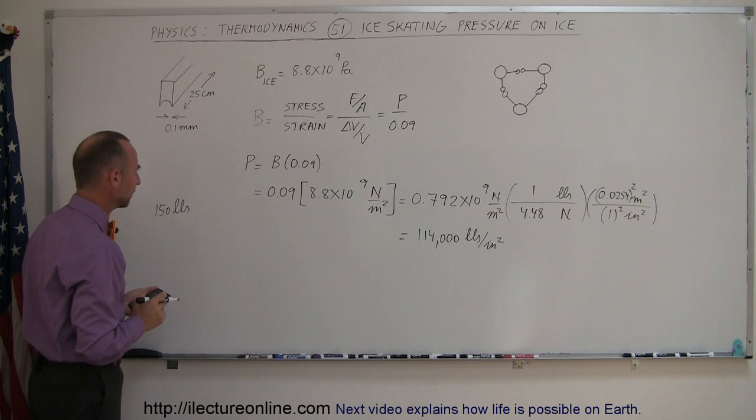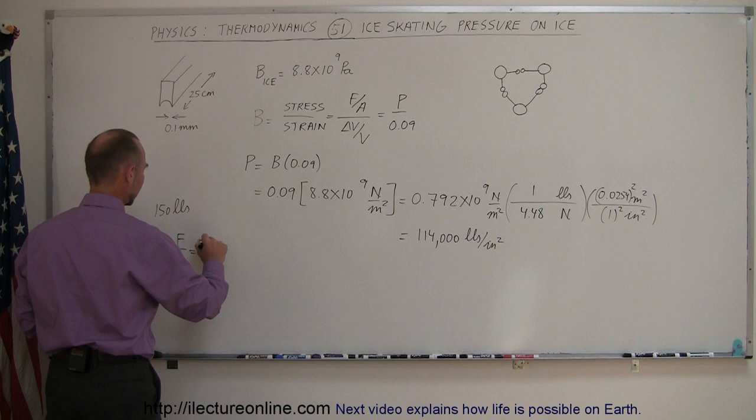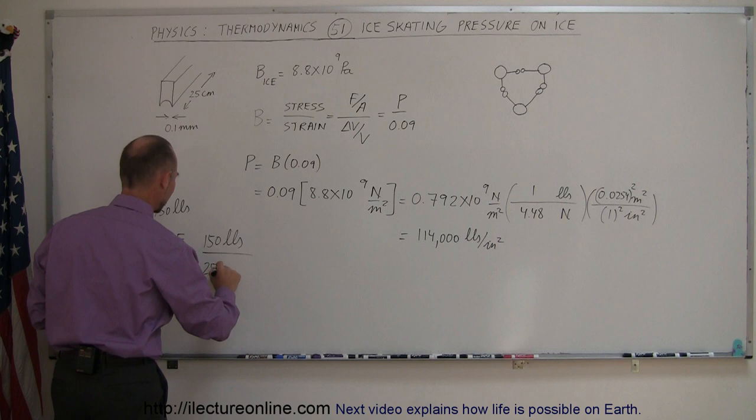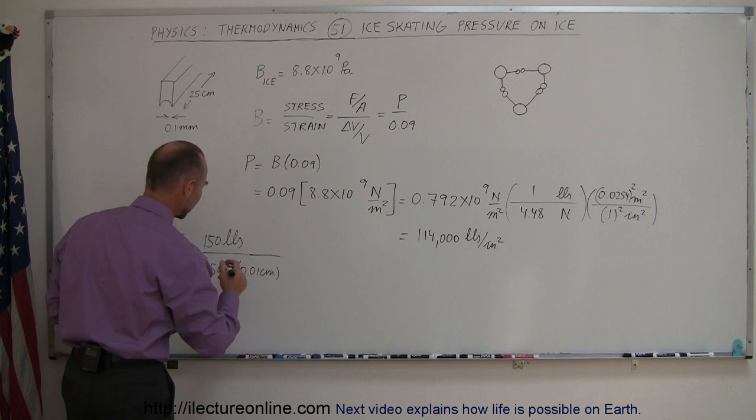Well, again, pressure is force divided by area, and the force of a 150-pound person is 150 pounds. The area would be 25 centimeters times 0.1 millimeter, which we'll convert to centimeters, so 25 centimeters times 0.01 centimeter.